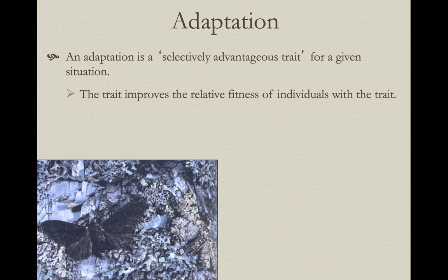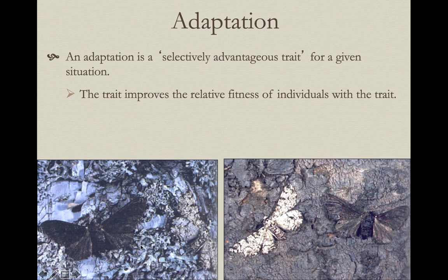In this example there are two moths, one of which is probably not easy to see. These are two different morphs of the salt and pepper moths. This morph on this background is actually adaptive; the melanistic form here is not adaptive — it's going to be more likely seen by a predator. However, in this other environment the reverse is true: the salt and pepper morph stands out and the melanistic form is the adaptive morphology. Individuals with those alleles producing that phenotype will have higher fitness. So a trait is only an adaptation given a specific environmental circumstance.